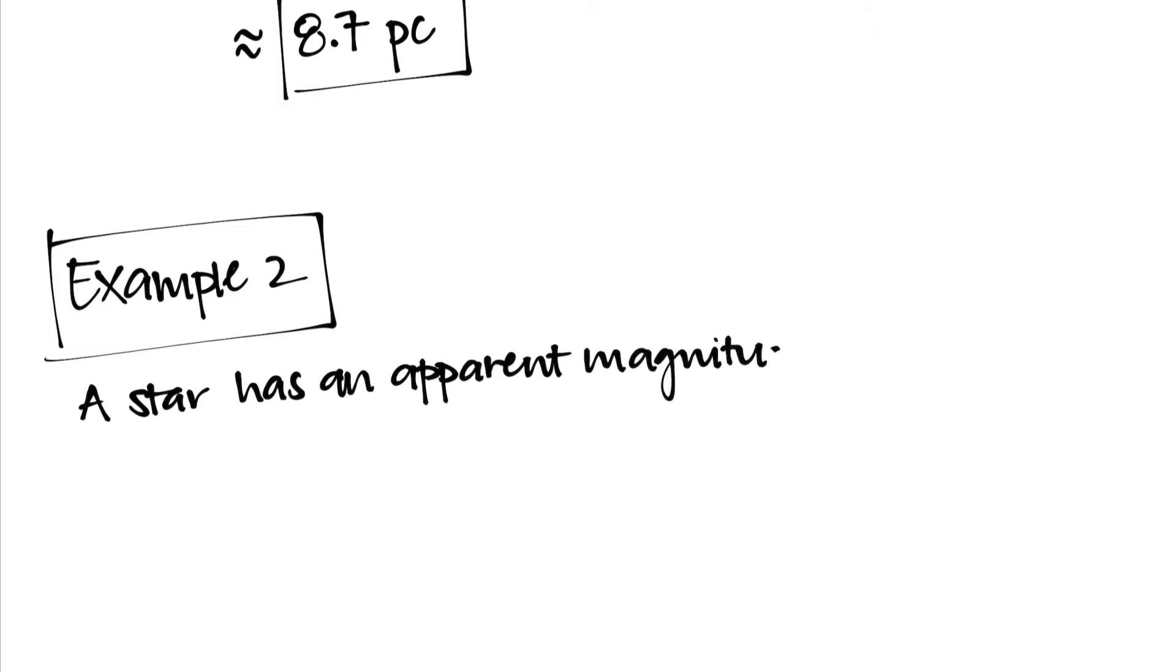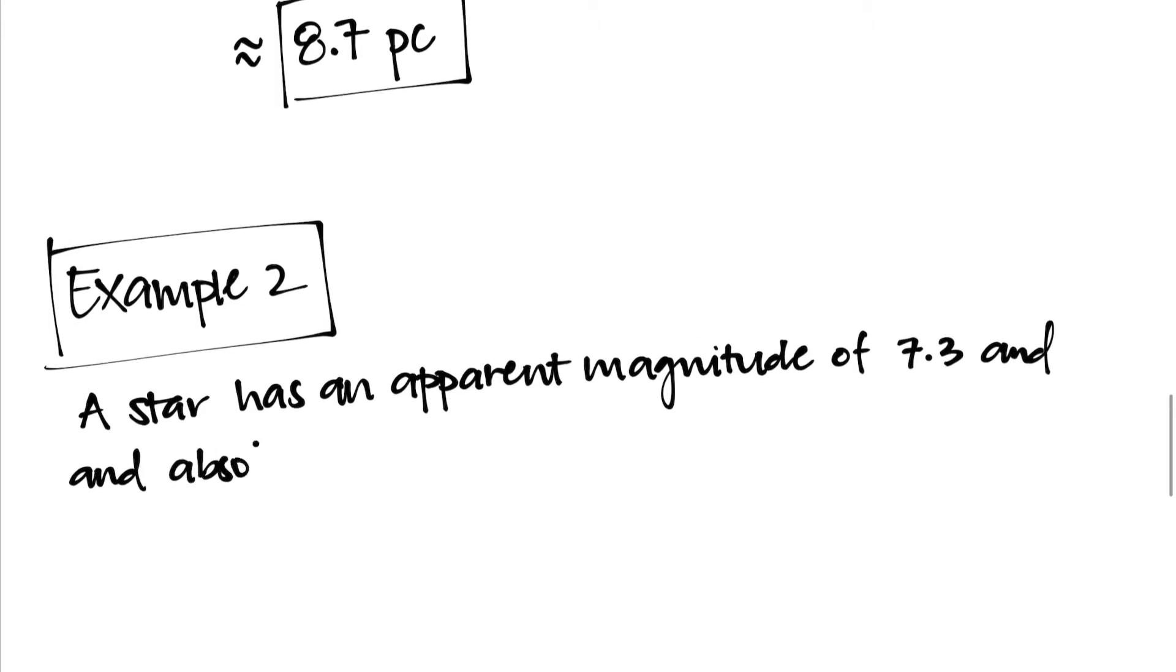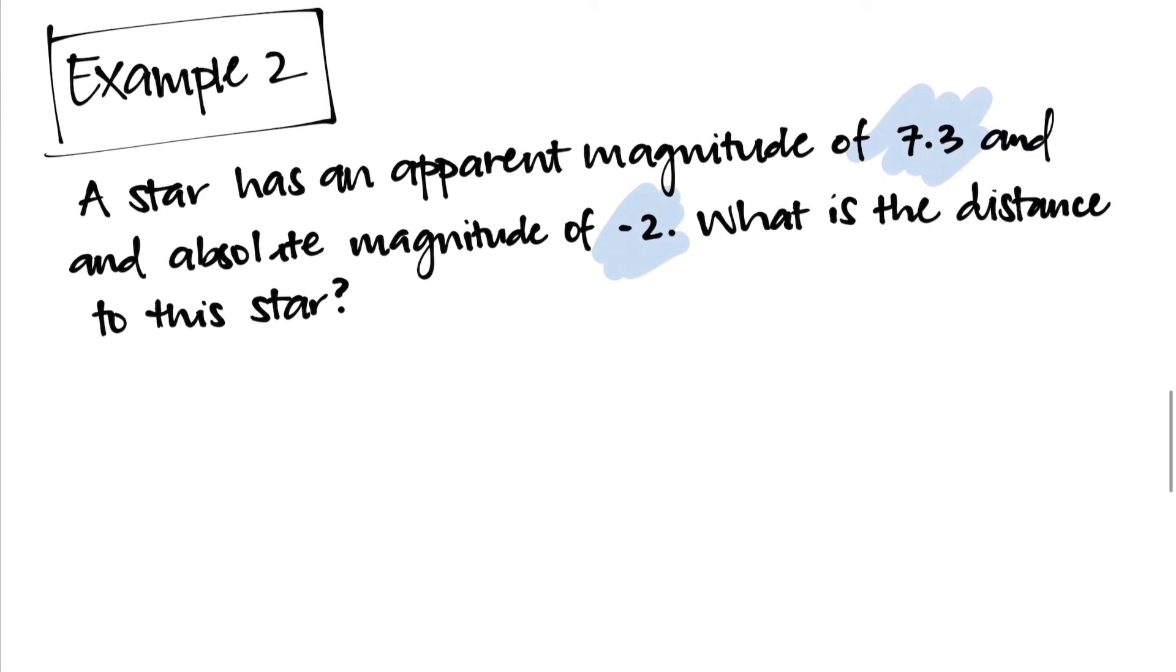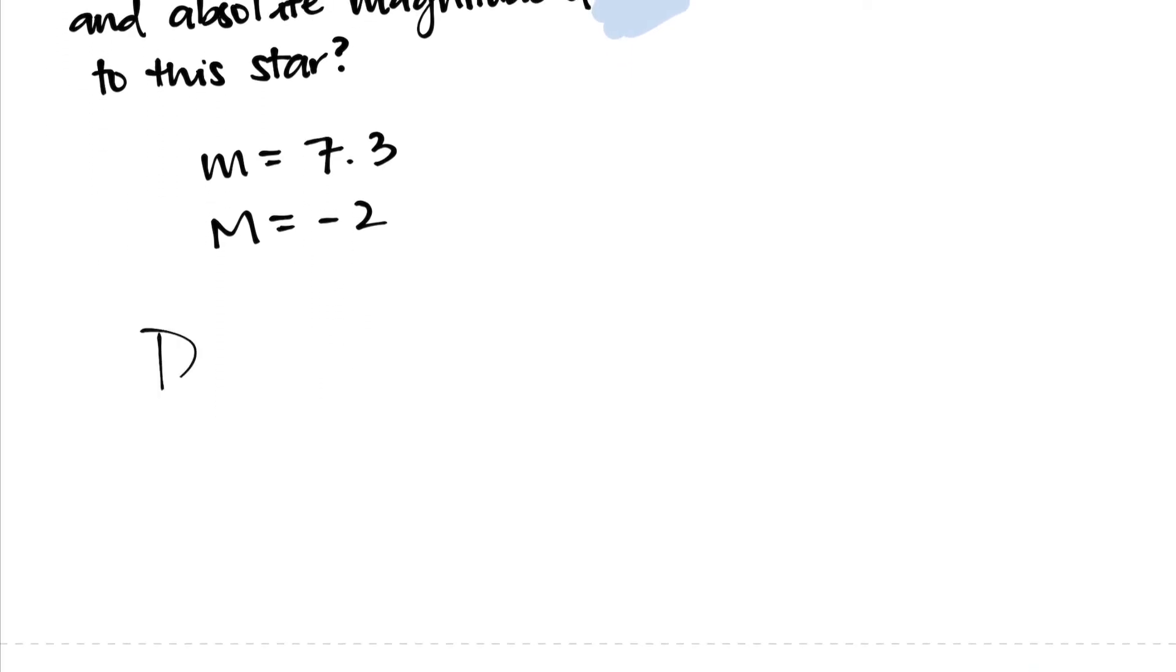Example 2 says a star has an apparent magnitude of 7.3 and an absolute magnitude of negative 2. What is the distance to this star? In order to solve this problem we again have to identify our apparent magnitude value and our absolute magnitude value. So in this case we have variables lowercase m and uppercase M given as 7.3 and negative 2 respectively. And these are going to be used in the distance modulus which says D equals 10 to the power of lowercase m minus uppercase M plus 5, all of that over 5. So let's go ahead and plug in 7.3 for lowercase m.